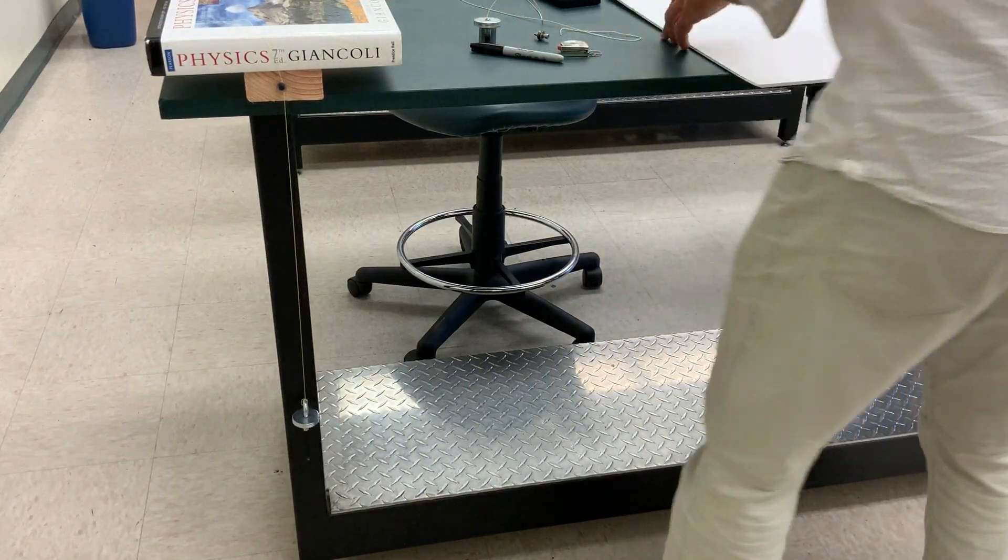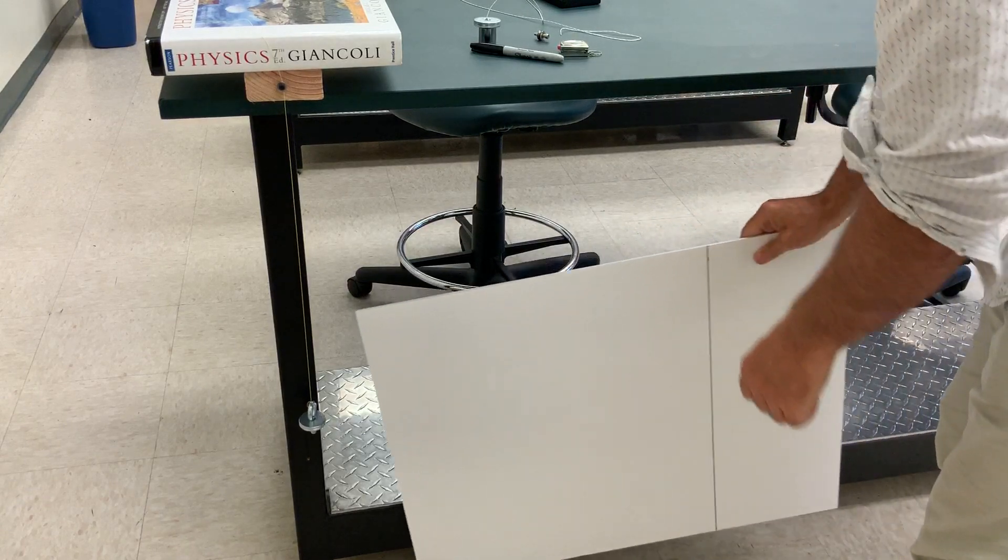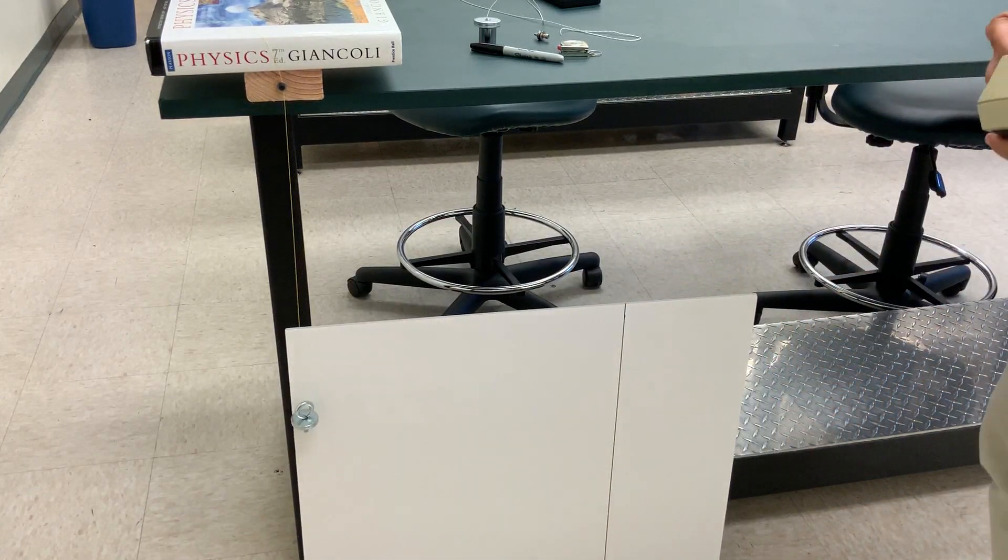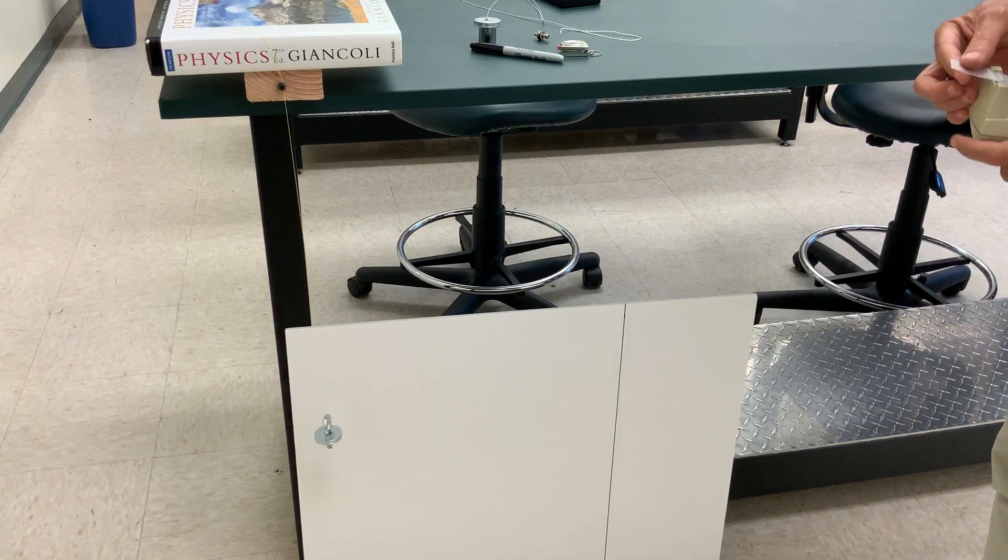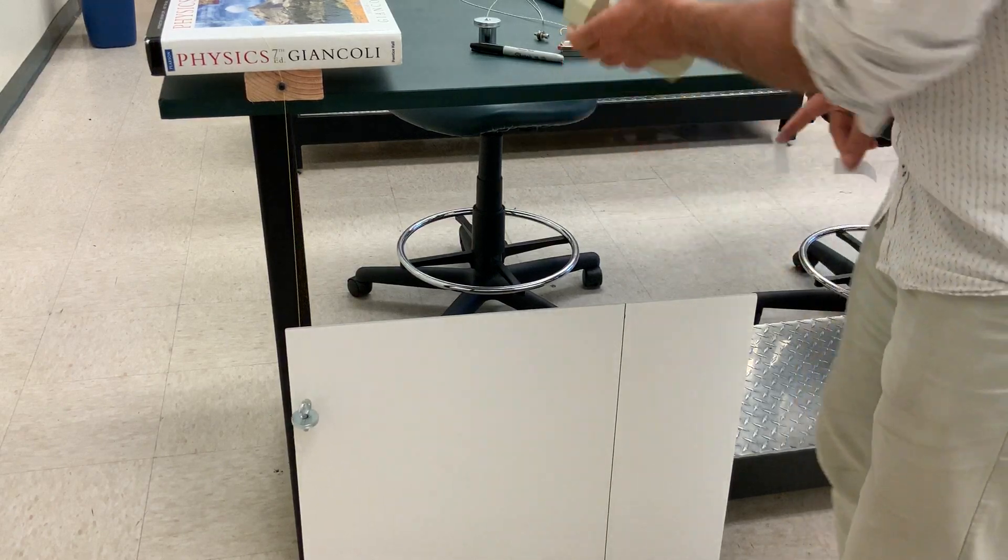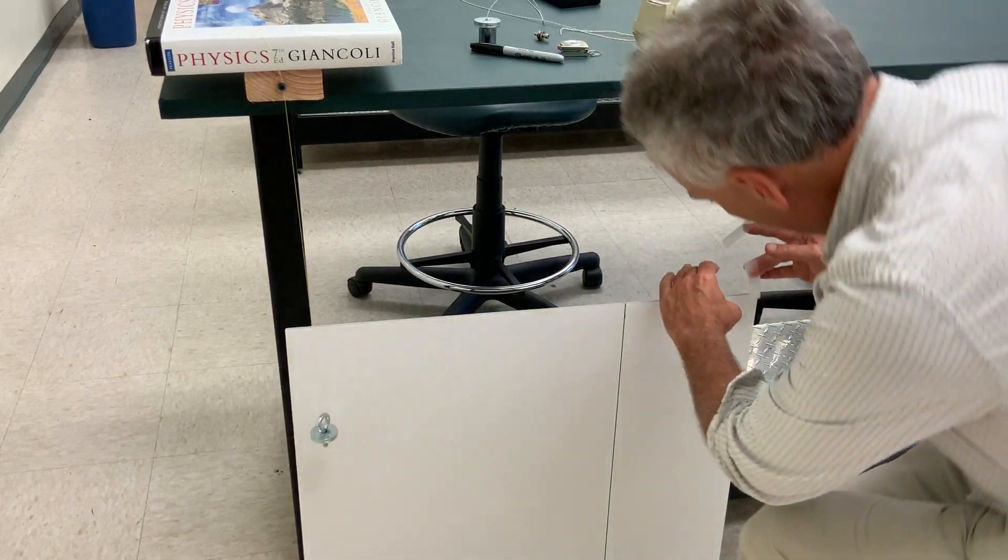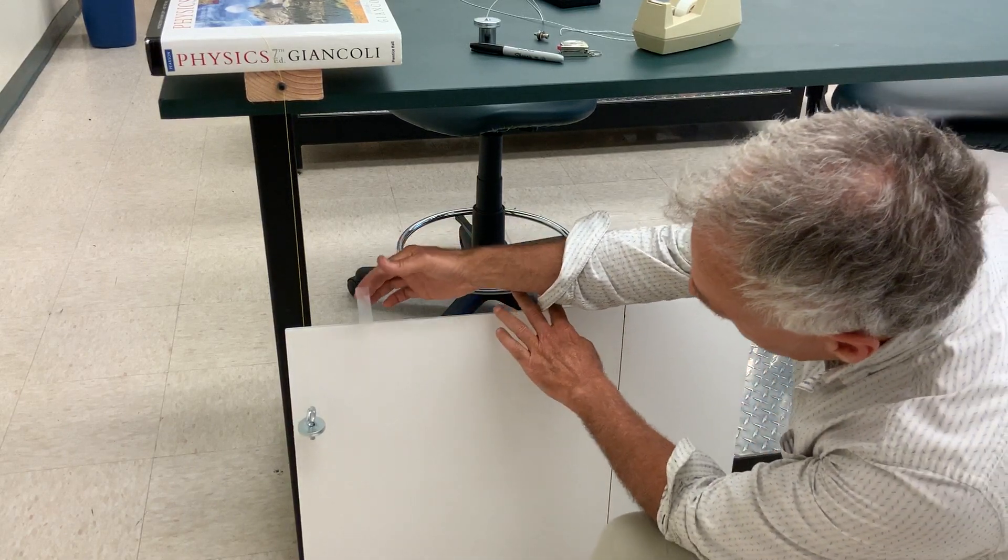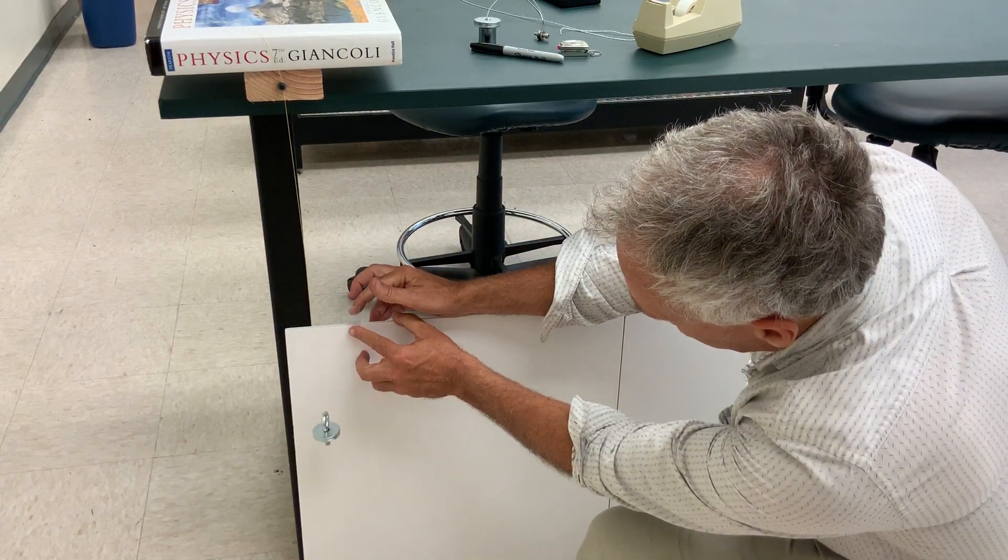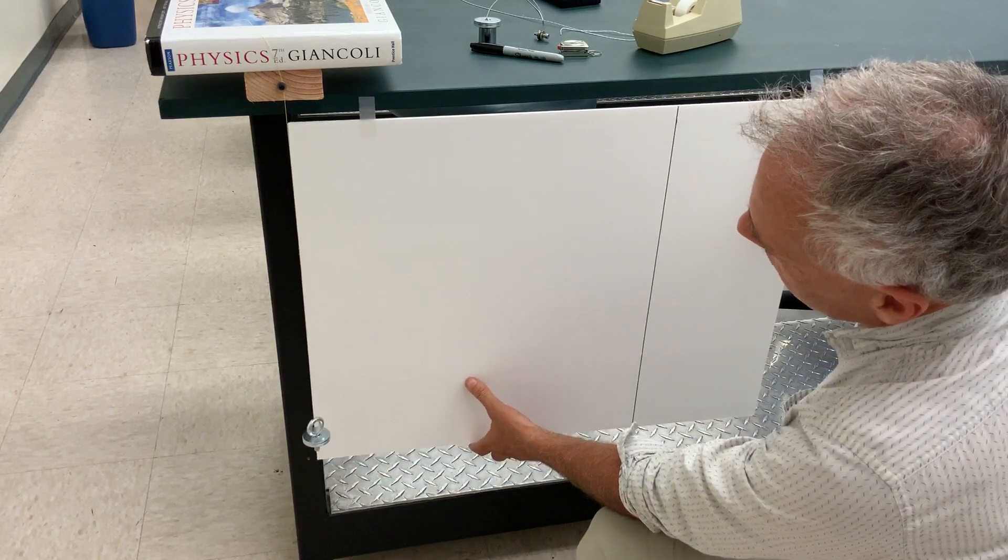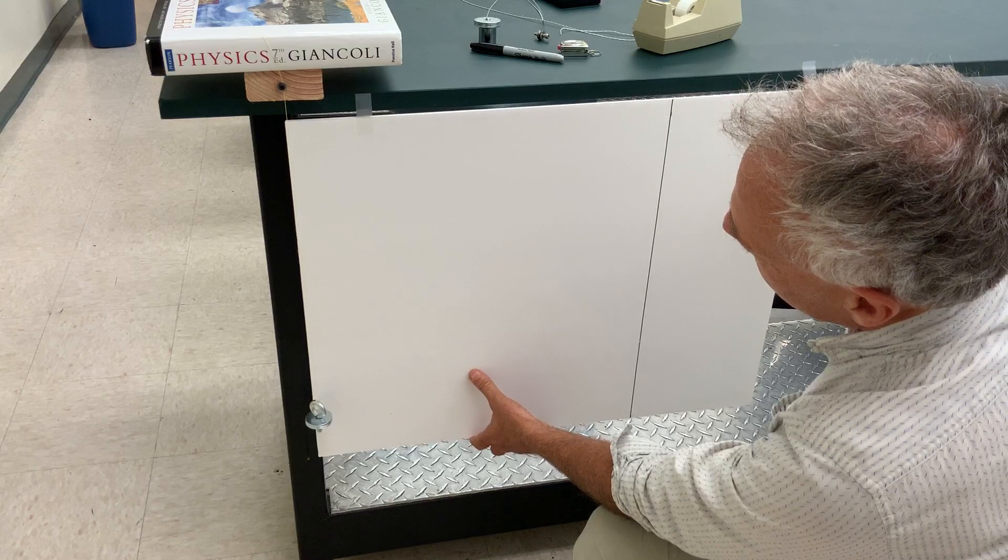Next we're going to mount this board. So we have two pieces of tape. Put one on each end hanging up like this. Put it in from the end on this side. And we're going to tape it to hanging down from the table.